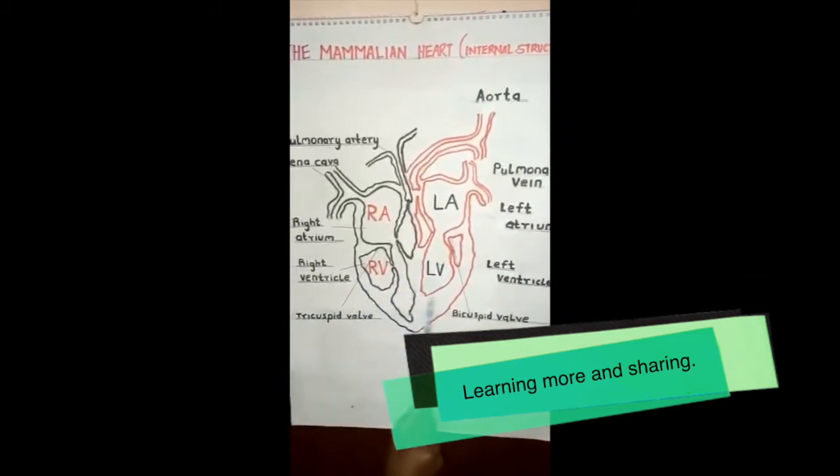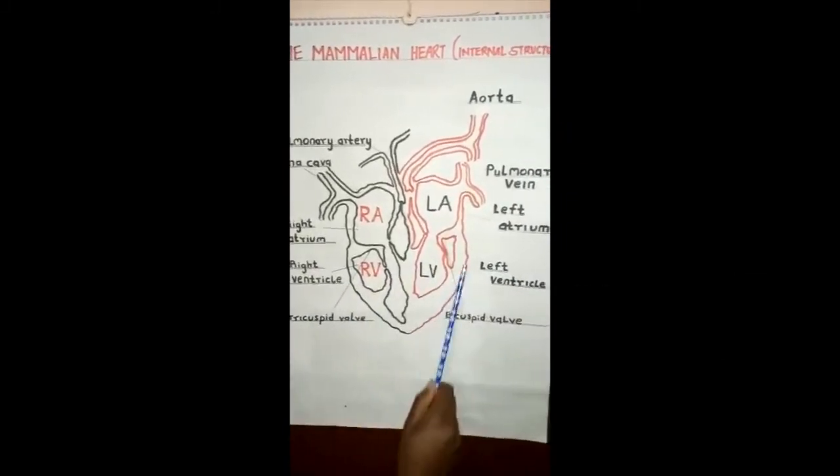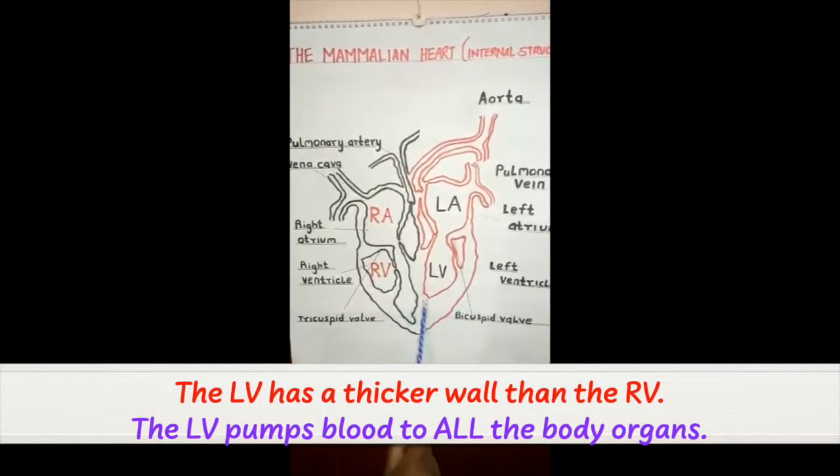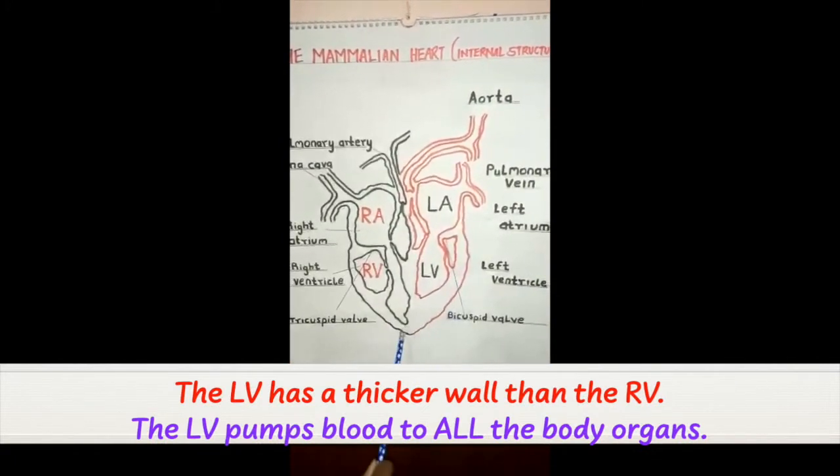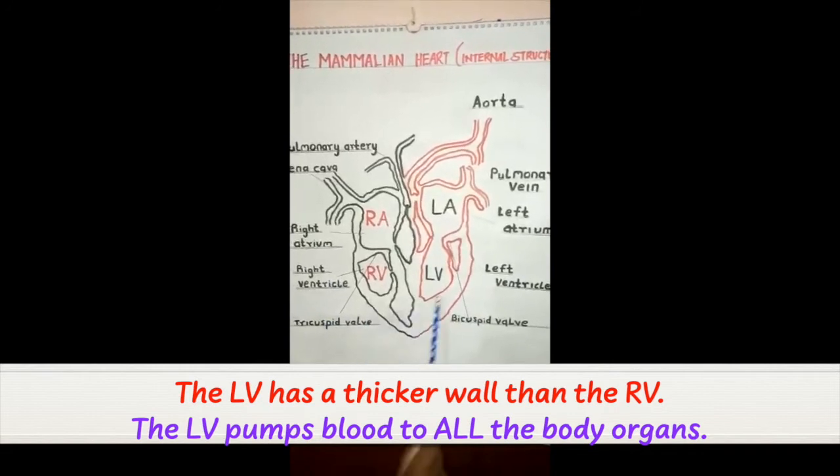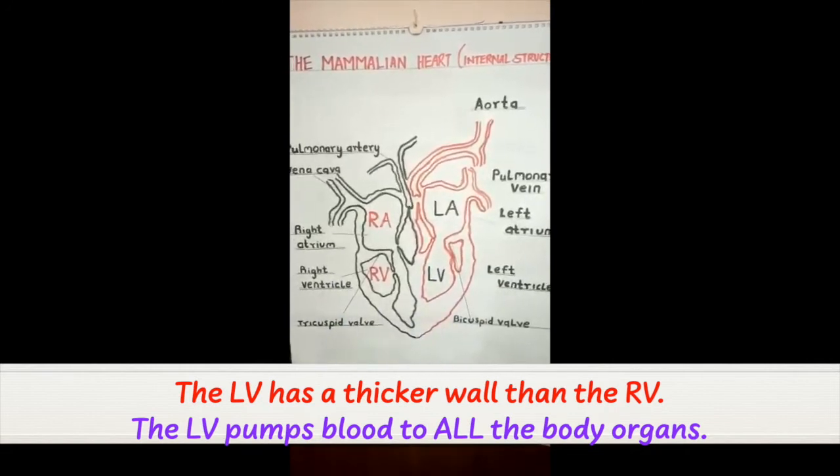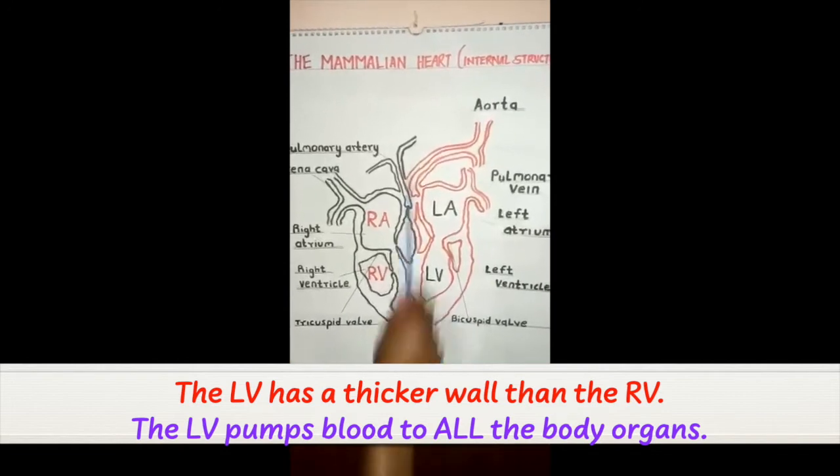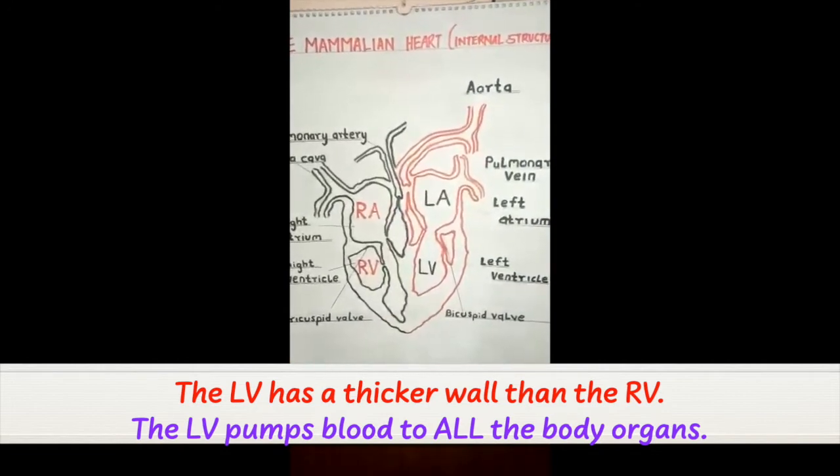The right ventricle and the left ventricle have muscles known as the cardiac muscles. The left ventricle has a thicker wall than the right ventricle because it has to generate a force that will push the blood out of the heart to the other body organs.